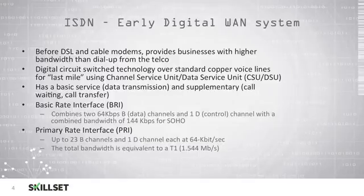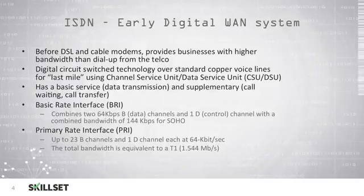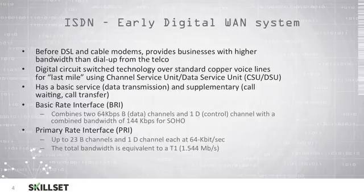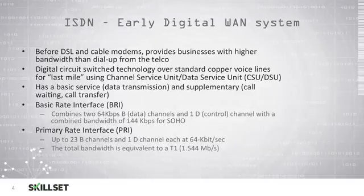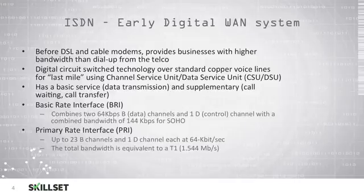ISDN was configured with a basic service for data transmission and a supplementary service to provide call weighting and call transfer. ISDN was a combination of two 64 kilobits per second data channels known as B-channels and one D-channel or control channel, providing the user with a combined bandwidth of 144 kilobits per second, which was very useful for small offices and home offices. Primary Rate Interface or PRI provided up to 23 B-channels with one D-channel, each at 64 kilobits per second. The total bandwidth for this connection was equivalent to a T1 line or 1.544 megabits per second.